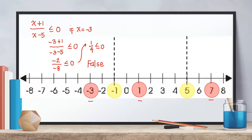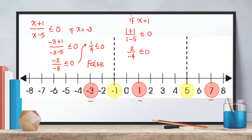Now we will use x = 1. Substituting into our given rational inequality, we get (1 + 1) / (1 − 5) ≤ 0, which simplifies to 2 / −4 ≤ 0, giving −1/2 ≤ 0. Notice that this statement is true because all negative numbers are less than 0.